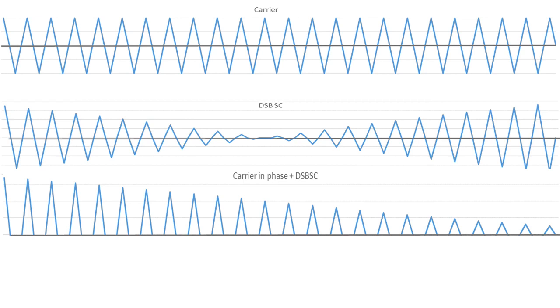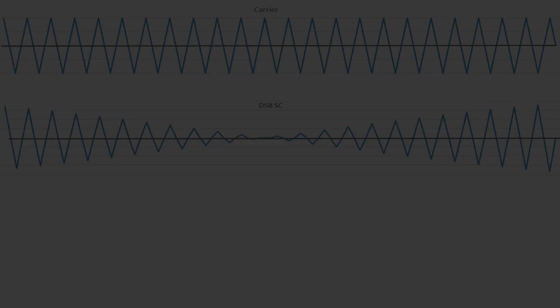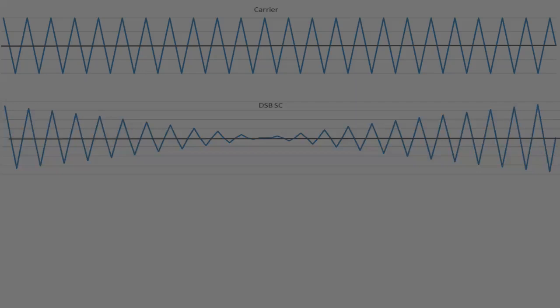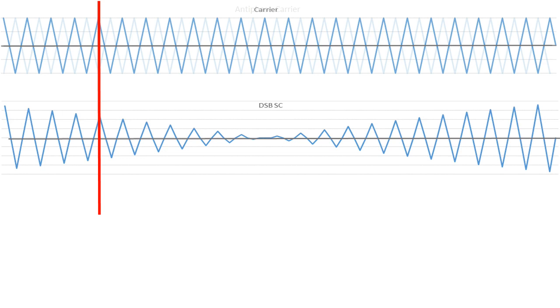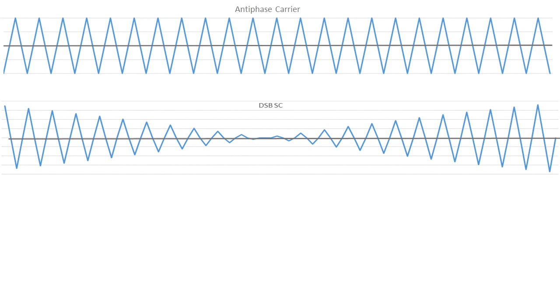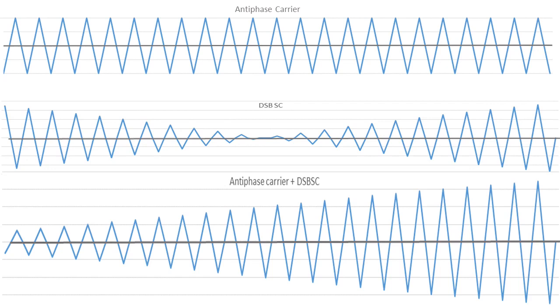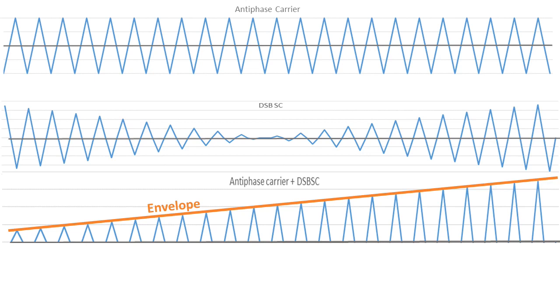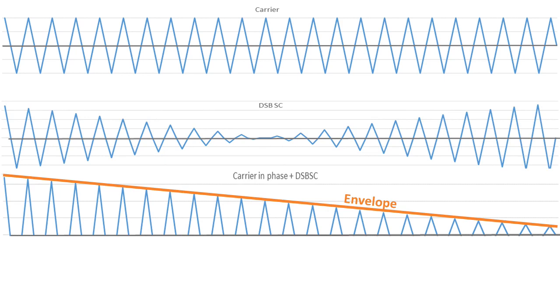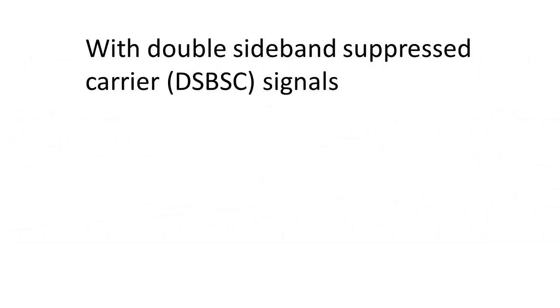The recovered signal matches the modulating signal — it's falling from left to right. Now if we shift the carrier phase by 180 degrees, inverting it, the trough of the carrier coincides with the peak of the DSBSC signal. Going through the same addition process gives a different waveform, and passing it through an envelope detector gives a recovered envelope that is inverted — now rising instead of falling. To summarise: with double sideband suppressed carrier signals, inverting the phase of the added carrier inverts the recovered modulation phase when the resultant is rectified. We'll see later how this effect is used to form the space modulation required in the ILS transmission.